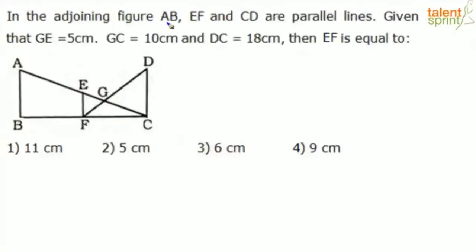In the adjoining figure, ABF, EF, and DC are parallel lines. GE is 5 centimeters, GC is 10 centimeters, and DC is 18 centimeters. We need to find the length of segment EF.